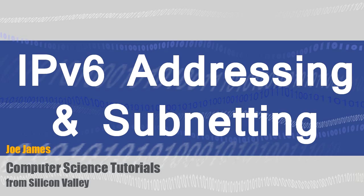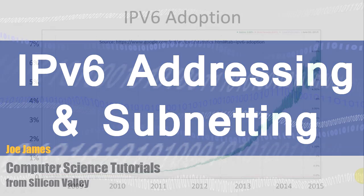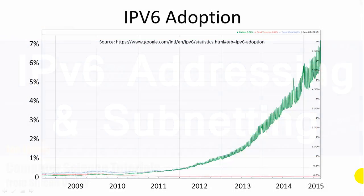Hi, I'm Joe James and in this video we're going to talk about IPv6 addressing and subnetting. First I want to show you this cool graph I found on Google. This shows how IPv6 is being adopted — it's pretty fast paced here in 2015, now approaching 7% of web traffic on Google and ramping up very quickly. IPv4 still has 93% of web traffic, but IPv6 is growing very quickly.